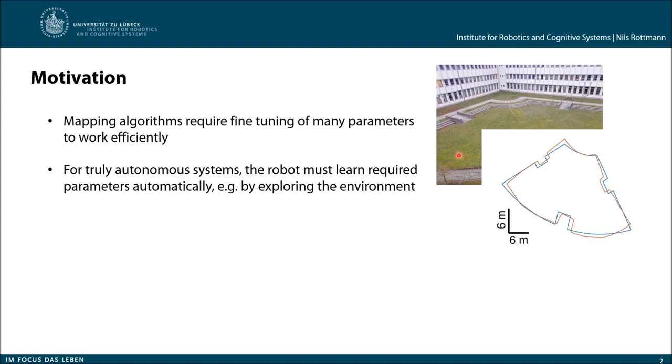For mapping such environments, in general, we need some parameter fine-tuning for our mapping algorithms. This is a big problem since we want to have truly autonomous systems — robots which we can simply place in any kind of environment and they will do their job. Since we require some fine-tuning of our mapping parameters, we have to know a bit beforehand about our environment and our robot — for example, what the odometric parameters are.